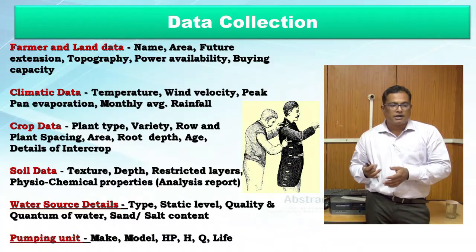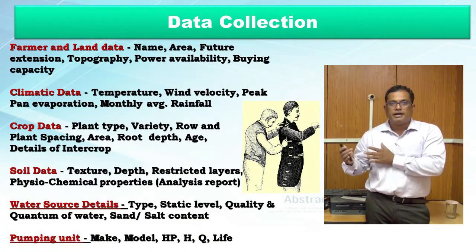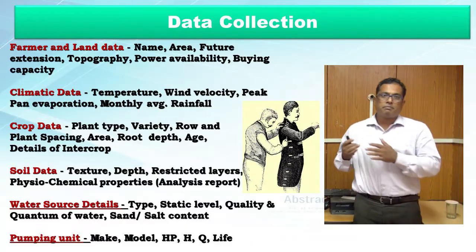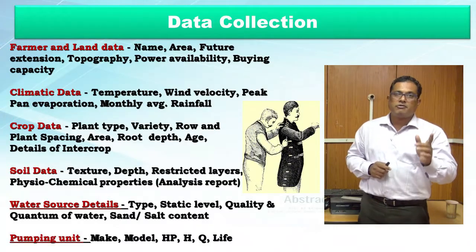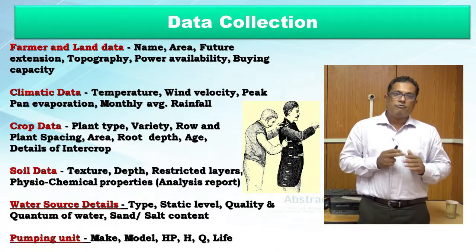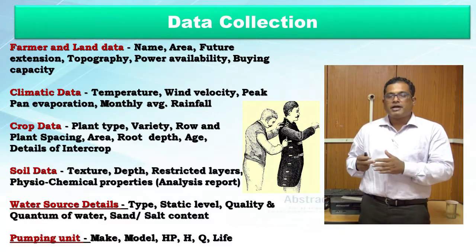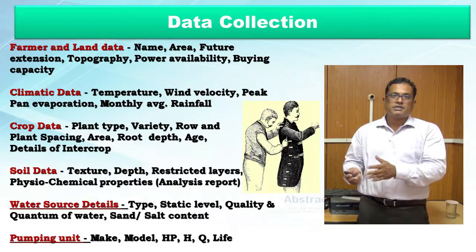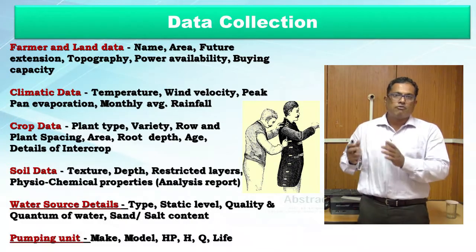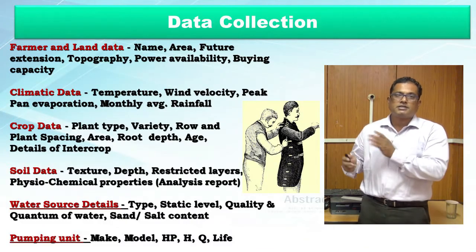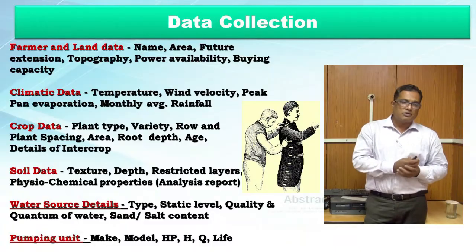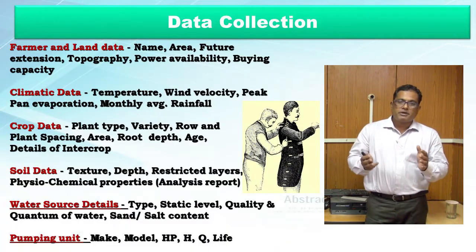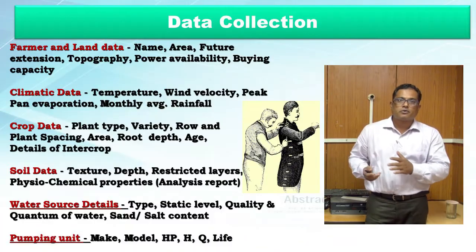The second data requirement is climatic data: temperature, relative humidity, peak evaporation data, rainfall — all of which are needed to determine water requirement of a crop for a particular season, especially evapotranspiration. This data should be obtained from agriculture universities or block offices that maintain such records. Third is crop data, which is gathered from the farmer through participatory rural appraisal or direct inquiry.